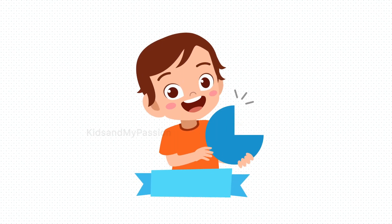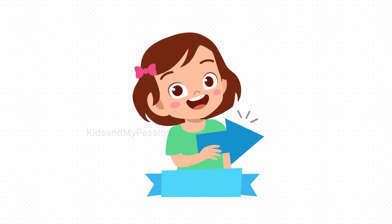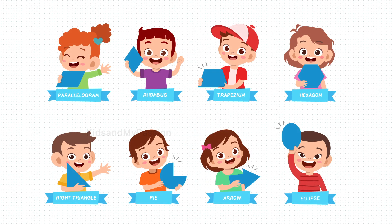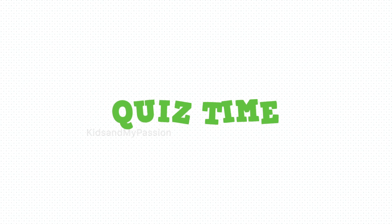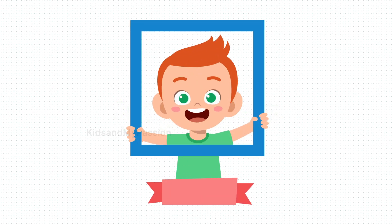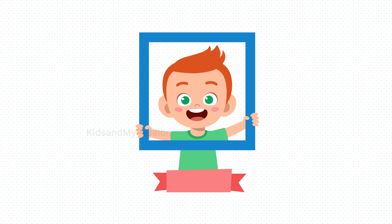What is this shape? And what is this? It's a right triangle. What is this? Pie. What is this? Hexagon.